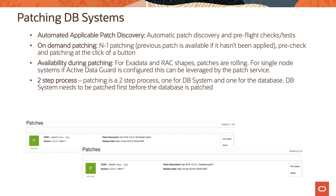Let us now look at patching database systems as part of lifecycle management of OCI databases. OCI will automatically provide you patches on the console. At any given point you can have n-minus-one patches available for you to apply. You can run pre-checks on the existing patches that are available, and once those pre-check processes run successfully, you can patch your database at the click of a button.